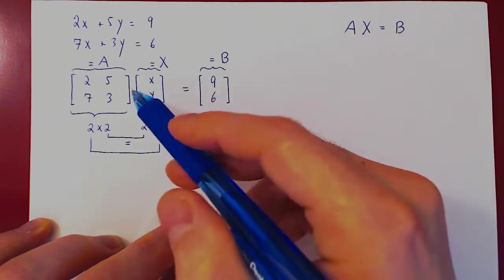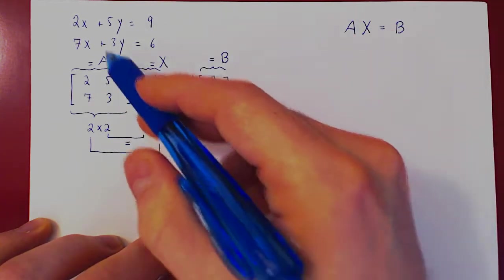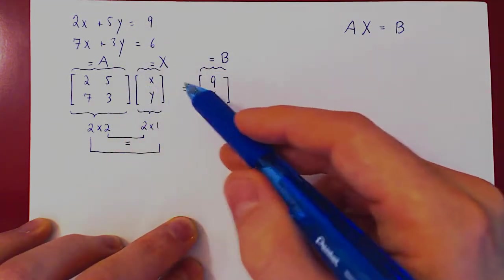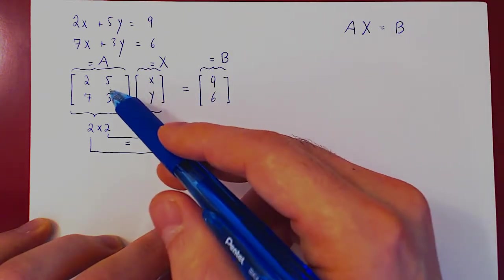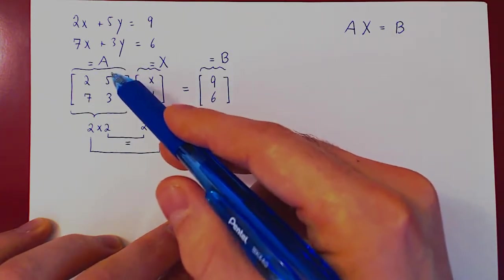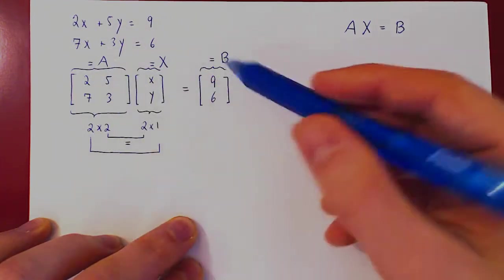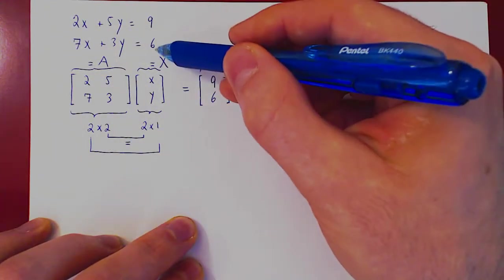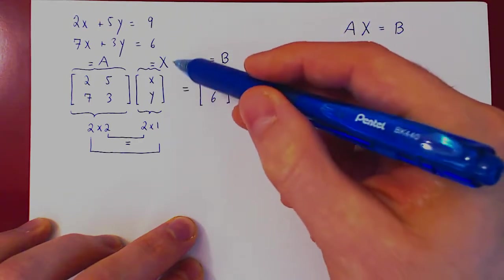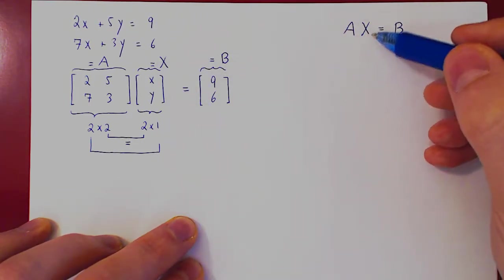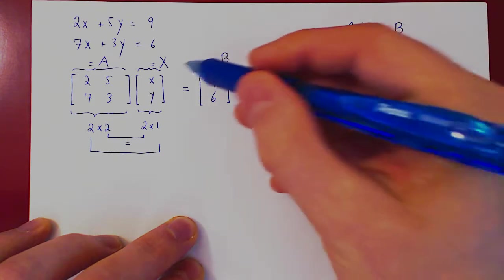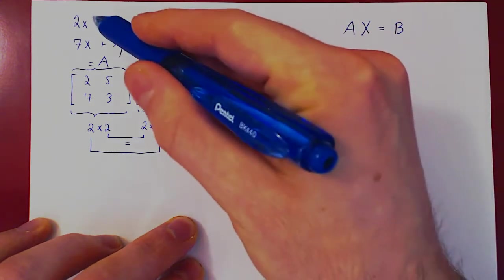Of course, here we use uppercase X to differentiate from the single real variable X to the column matrix. And you may wonder, well, is this a fluke? Well, the answer is no. And you can see quite easily that the matrix A is the matrix of coefficients, 2, 5, 7, 3. The matrix B is the column matrix of the constant terms, 9, 6. And the variable vector, or the variable column matrix X, contains the variables, XY.